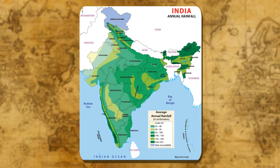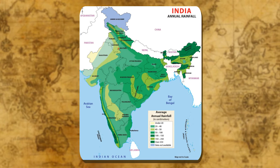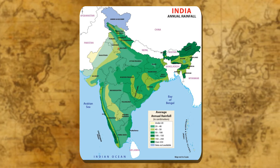Thematic maps. These are maps that represent particular features only, such as types of weather, distribution of forests, industries, people, minerals, etc.